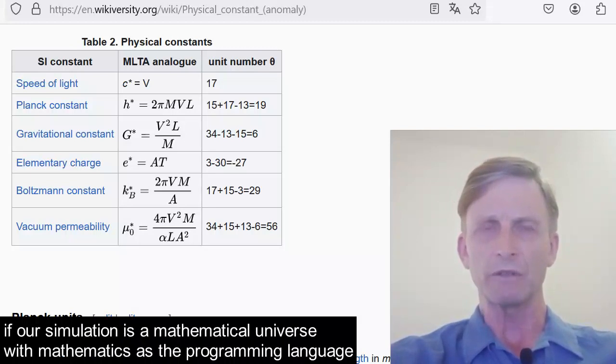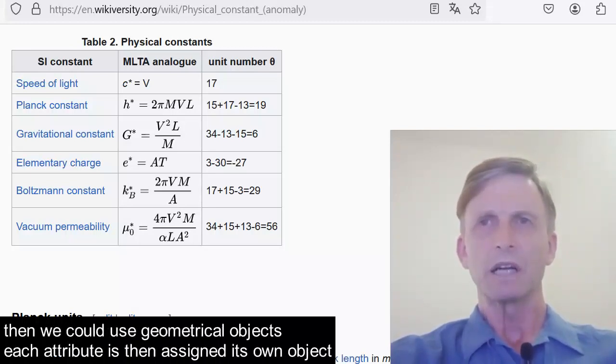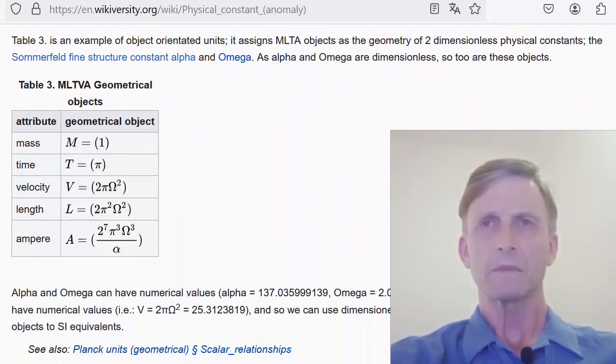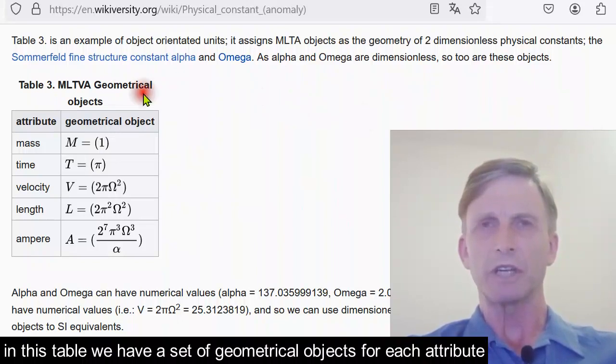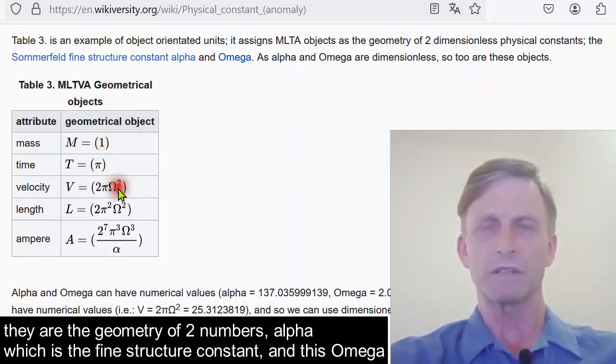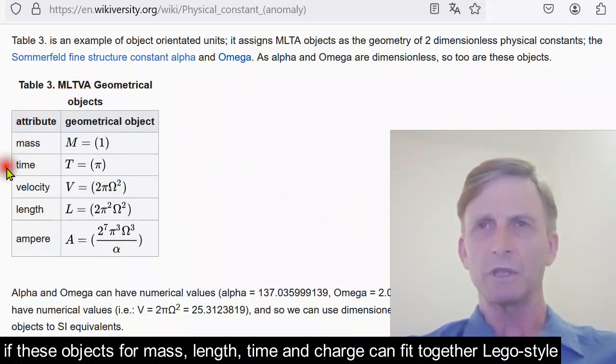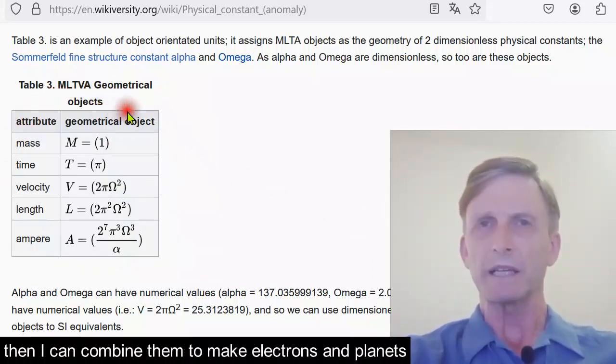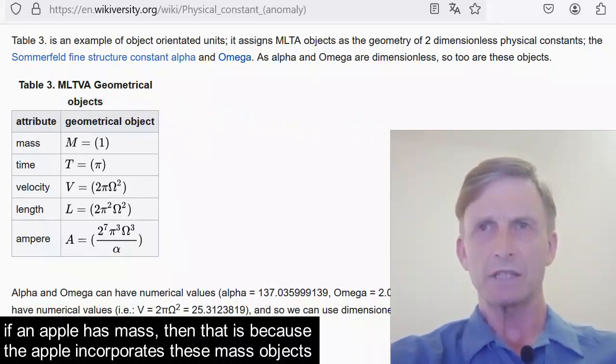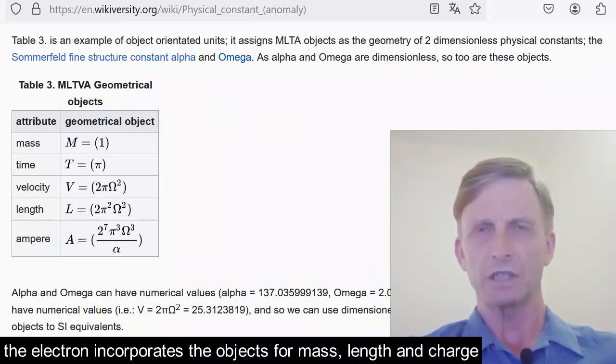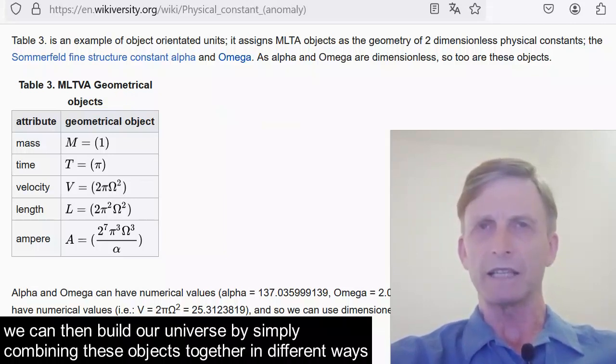If our simulation is a mathematical universe with mathematics as the programming language, then we could use geometrical objects. Each attribute is then assigned its own object. In this table, we have a set of geometrical objects for each attribute. They are the geometry of two numbers: alpha, which is the fine structure constant, and this omega. If these objects for mass, length, time, and charge can fit together Lego-style, then I can combine them to make electrons and planets. If an apple has mass, that is because the apple incorporates these mass objects. The electron has mass, wavelength, and charge, and so likewise the electron incorporates the objects for mass, length, and charge.